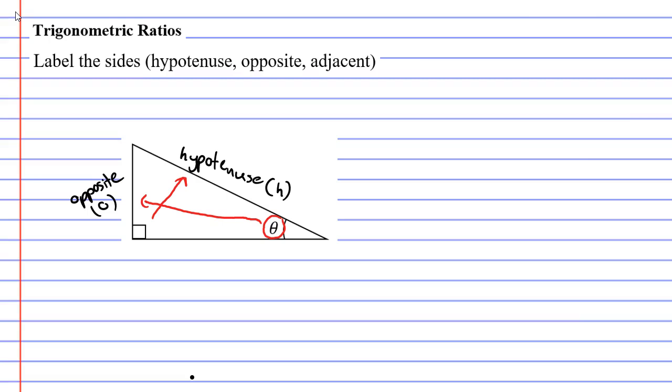And finally, the third side is called the adjacent side, which we label with an A. And adjacent means next to. This is the side that is next to the angle labelled theta.